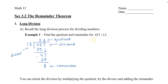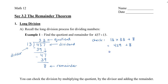To check if we've done this correctly, we take the quotient, multiply it by the divisor, and add the remainder. So 13 times 33 — we calculate that to be 429 — plus 8, and that gives us 437, which is the dividend we started off with. So that confirms the correct quotient and remainder.